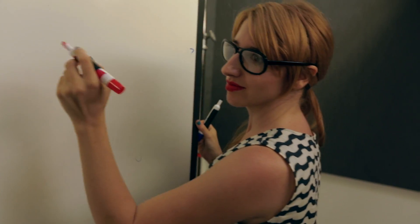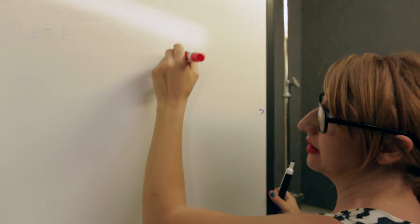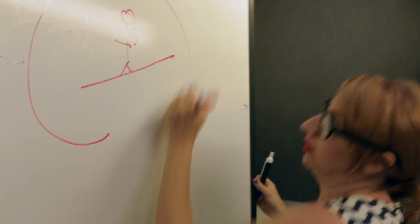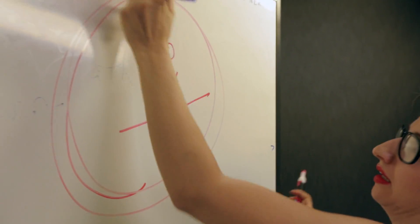Now. Bohr knew this model, it was unstable. Orbiting electrons should lose their way. Unless their angular momentum's quantized. Of course, I know that.